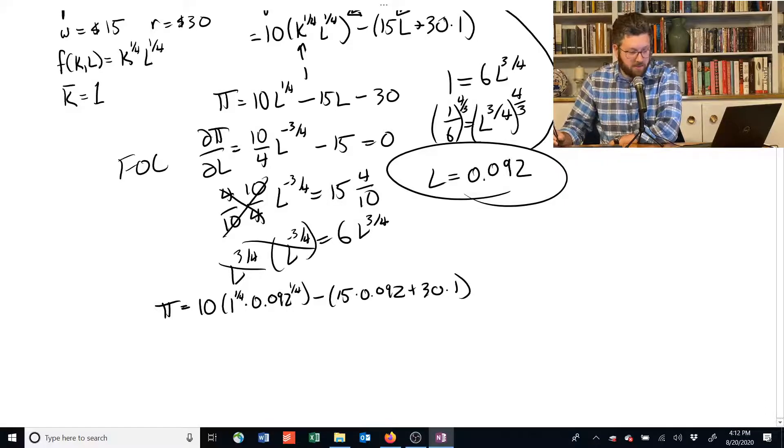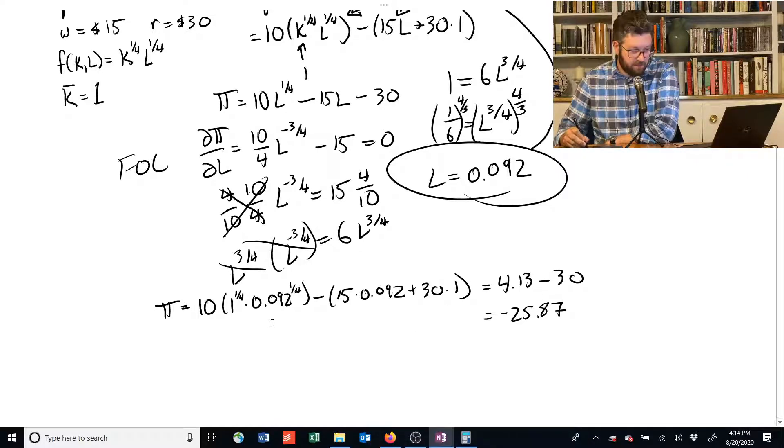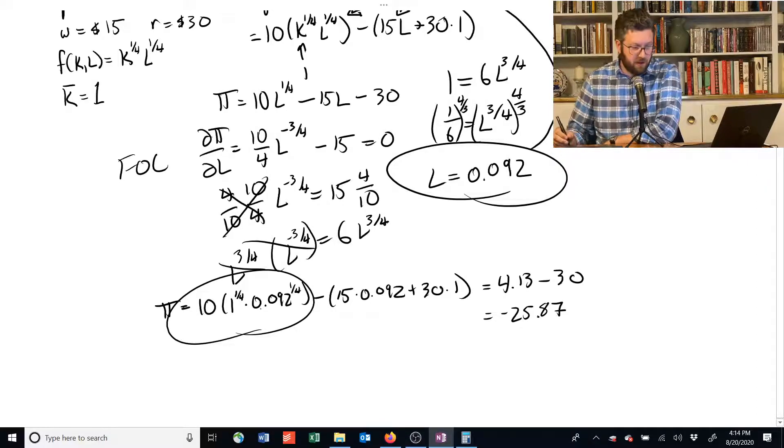And that's equal to, so if we calculate that all out, we get actually that if we take this, this guy over here, you get sales of something over $5 multiple subtract off $15 per worker times 0.092. And you get 4.13.